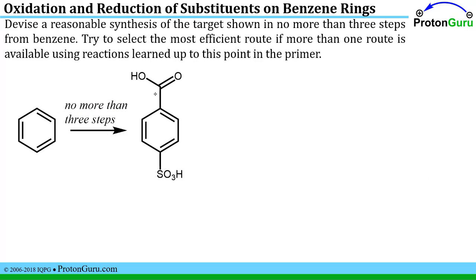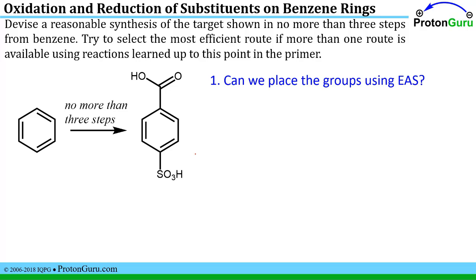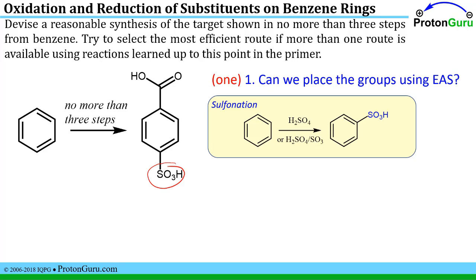Here's an example in which we have two substituents: a carboxylic acid and a sulfonic acid group. We ask ourselves, can we place these groups on using electrophilic aromatic substitution? We can put the sulfonic acid group on using the sulfonation reaction, but we do not have a way from standard electrophilic aromatic substitution reactions to place a carboxylic acid on directly.